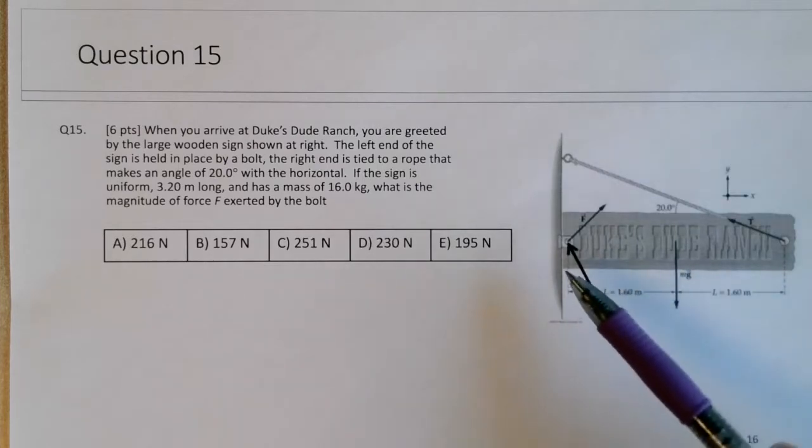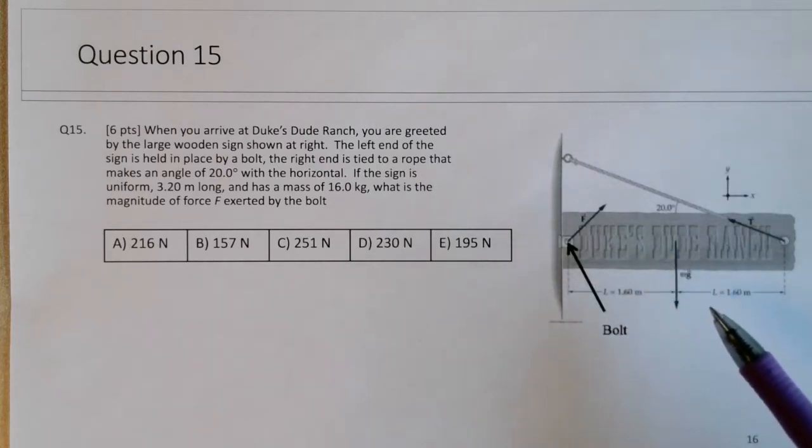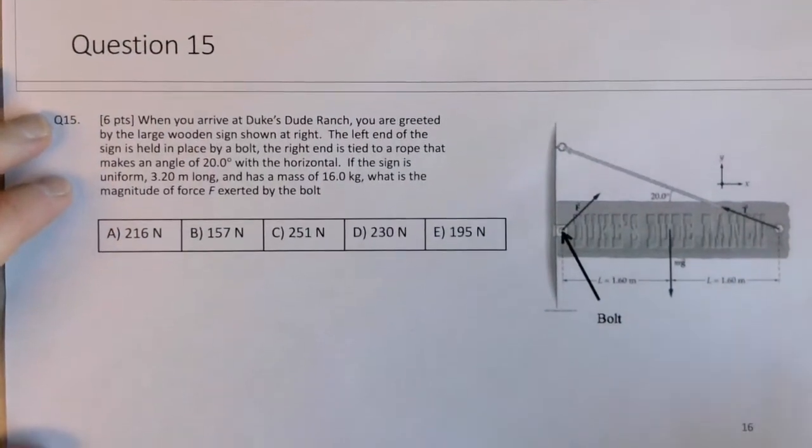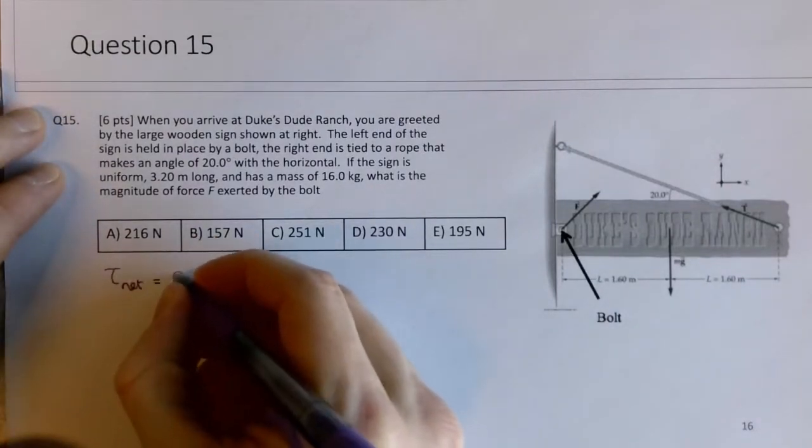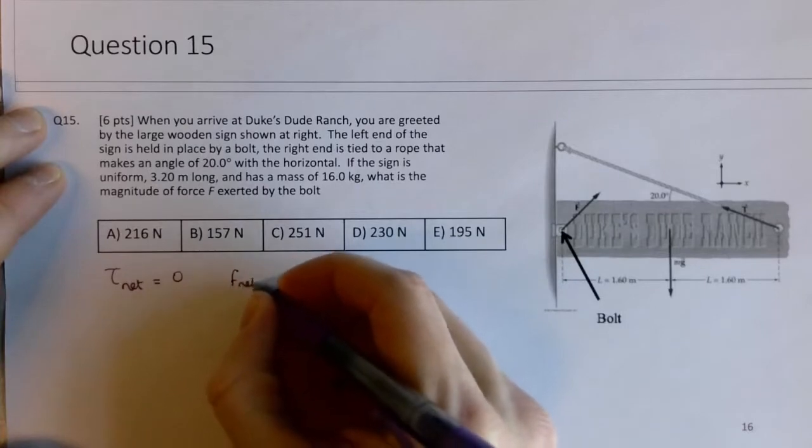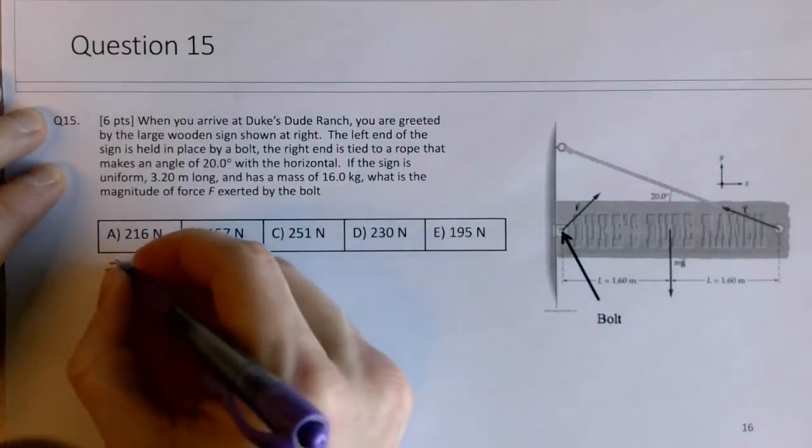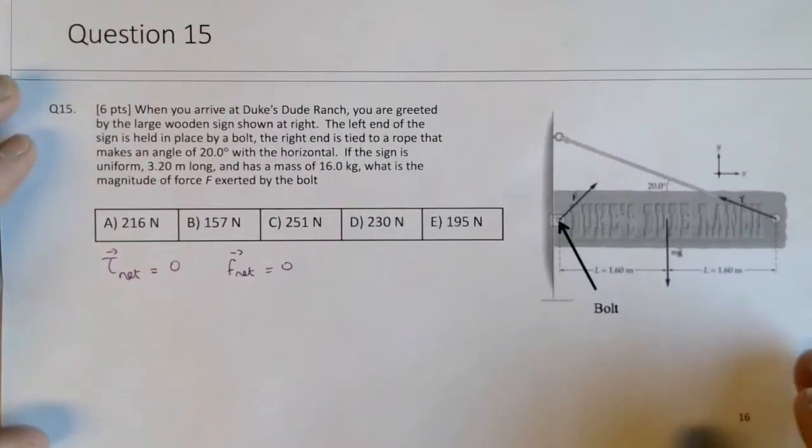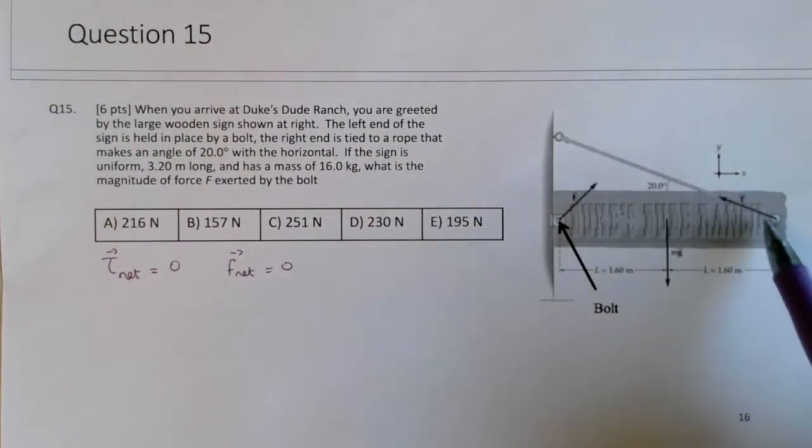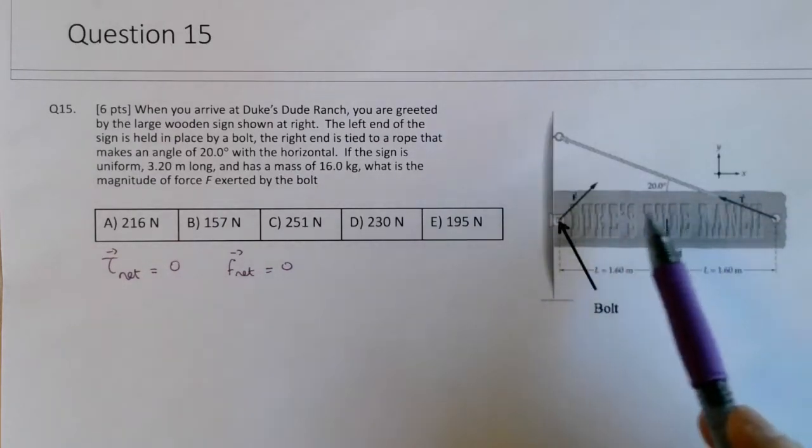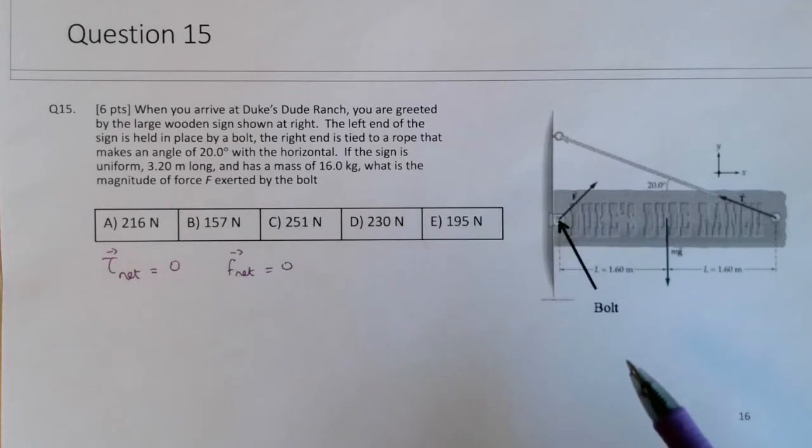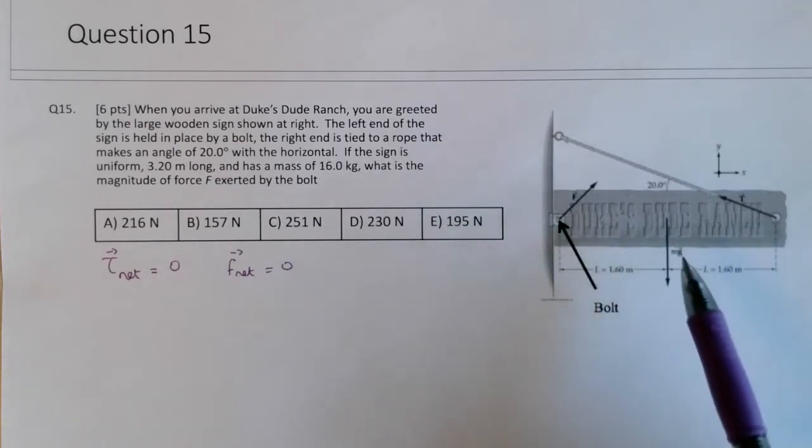So I'll solve this problem using both torque and Newton's second law. We know if it's in static equilibrium the net torque is zero and the net force is zero. So we can solve for the magnitude of the tension force which would have some similarities to the bolt force given that their x components have to be the same.